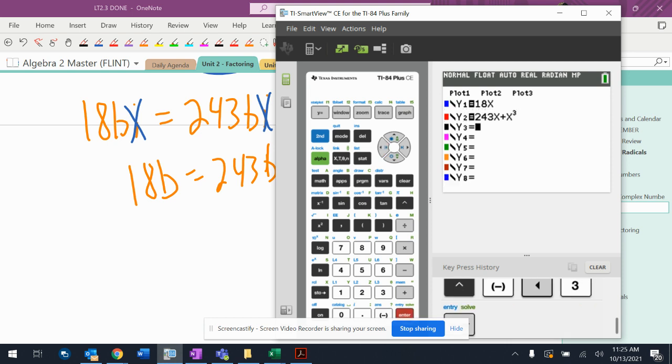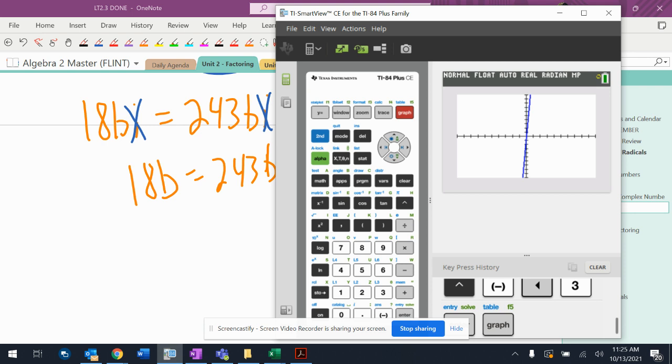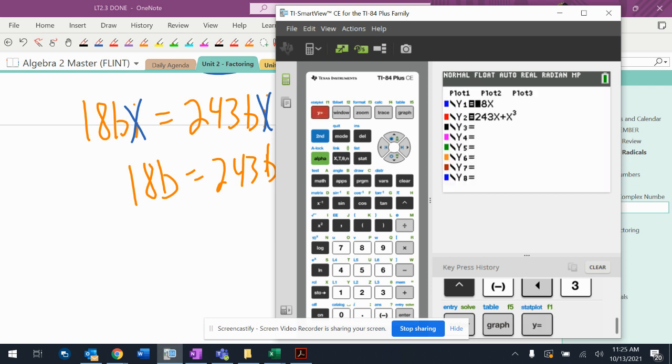All right, so there is my thing. If I hit graph it draws two really weird looking lines, and it's because the 18b is the blue line, the 18x is the blue line, it's a really steep line. The 243x plus x to the third, the second one, that's a third power equation, it's gigantic. It's really steep, it's really big.